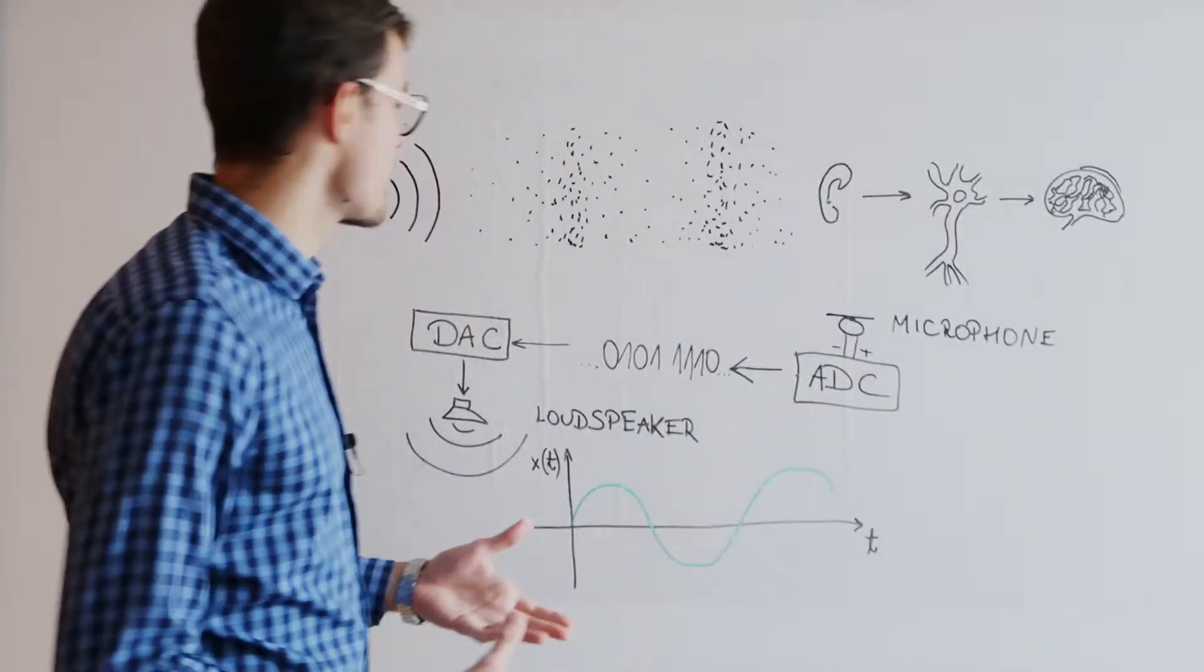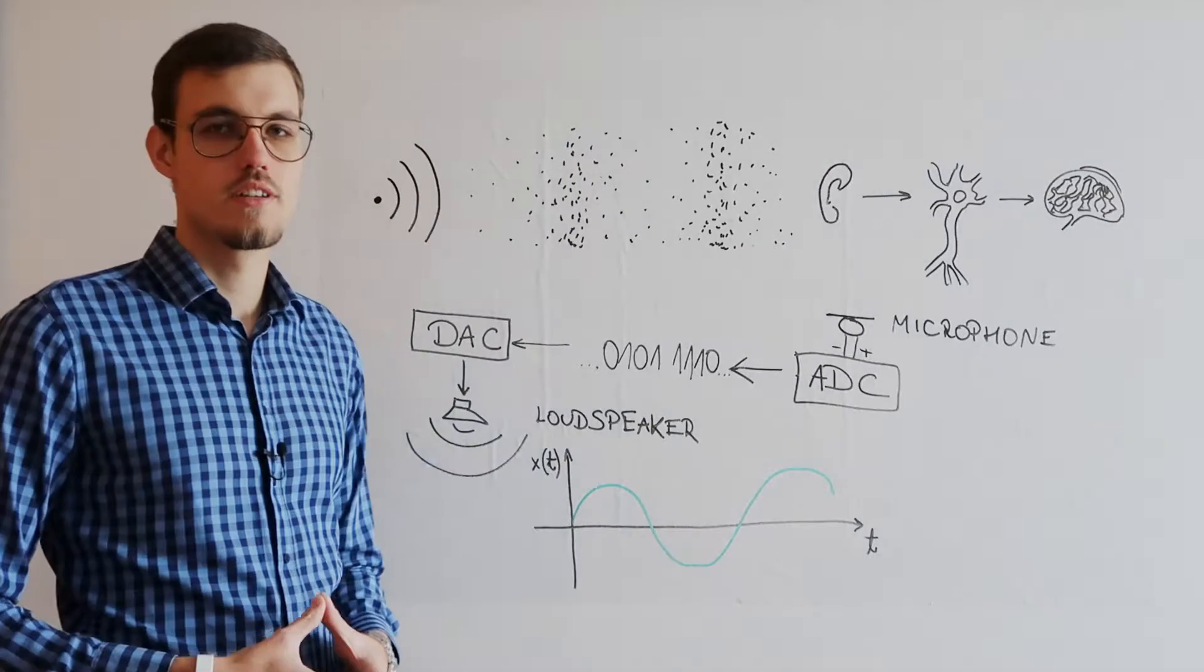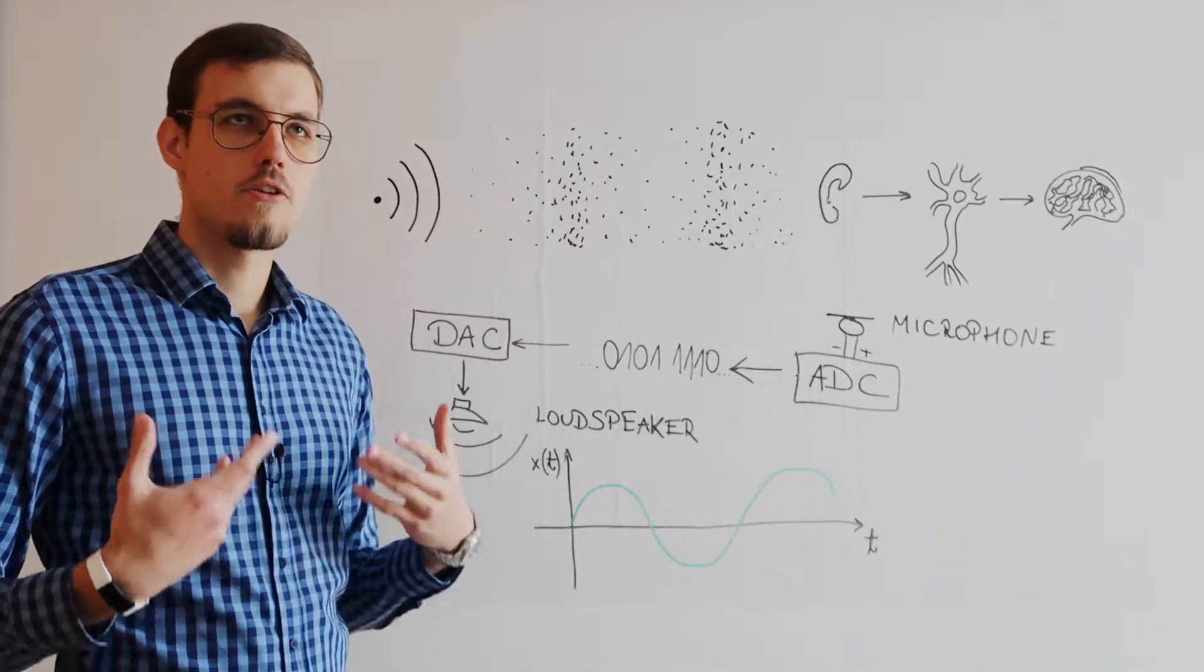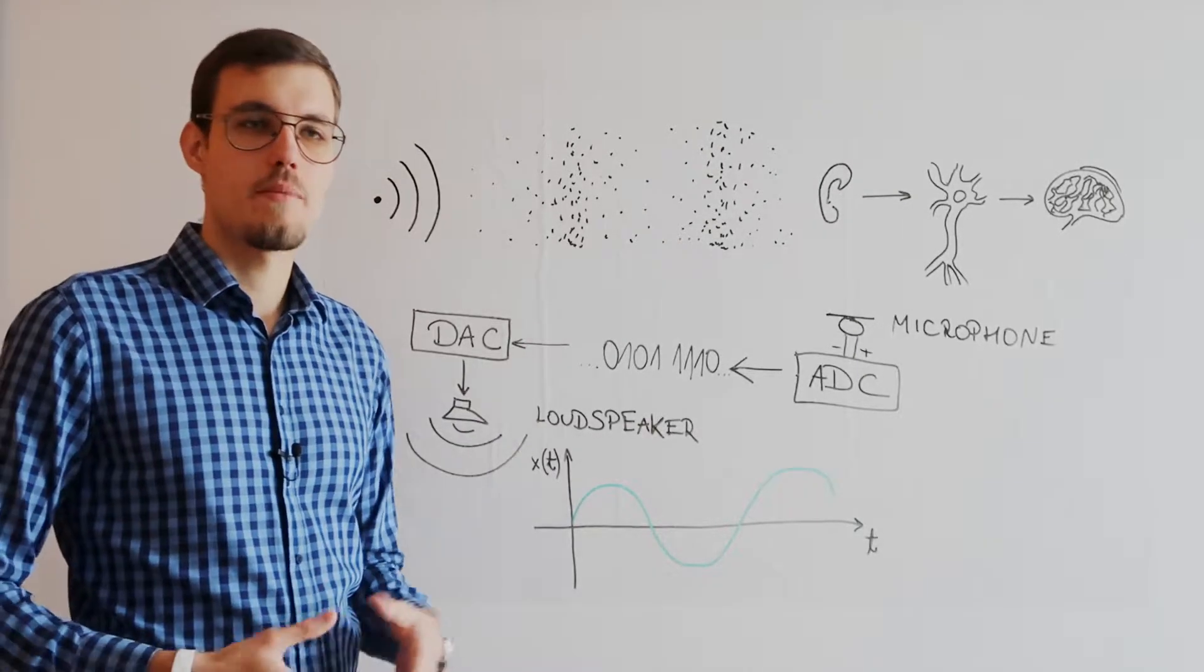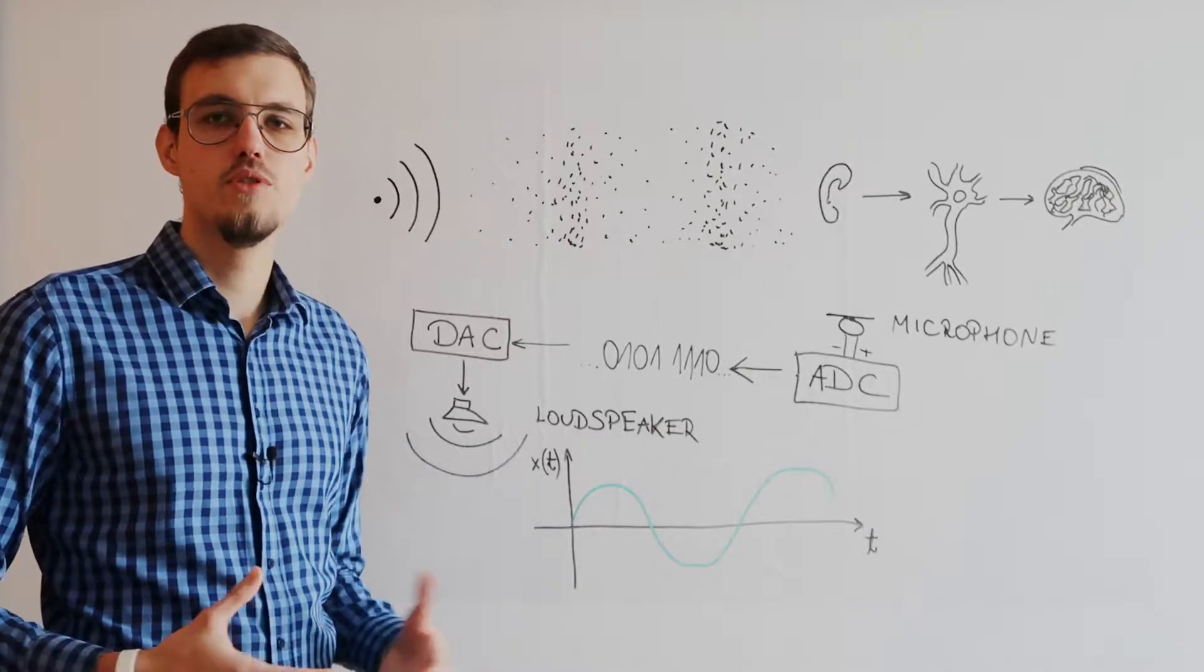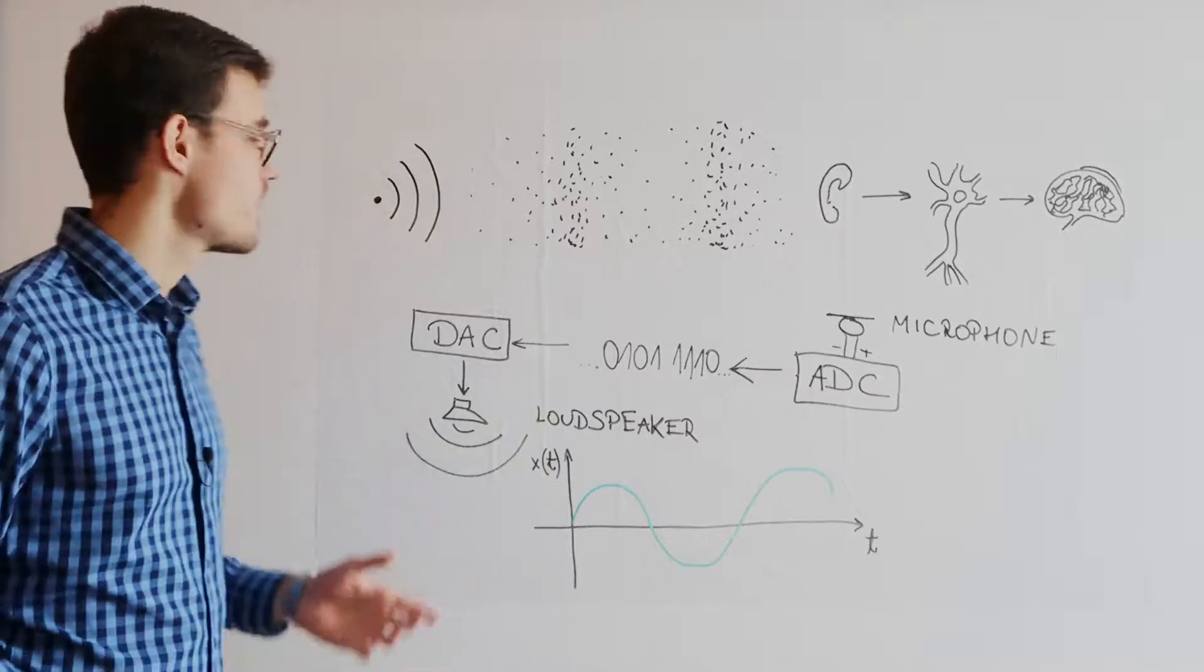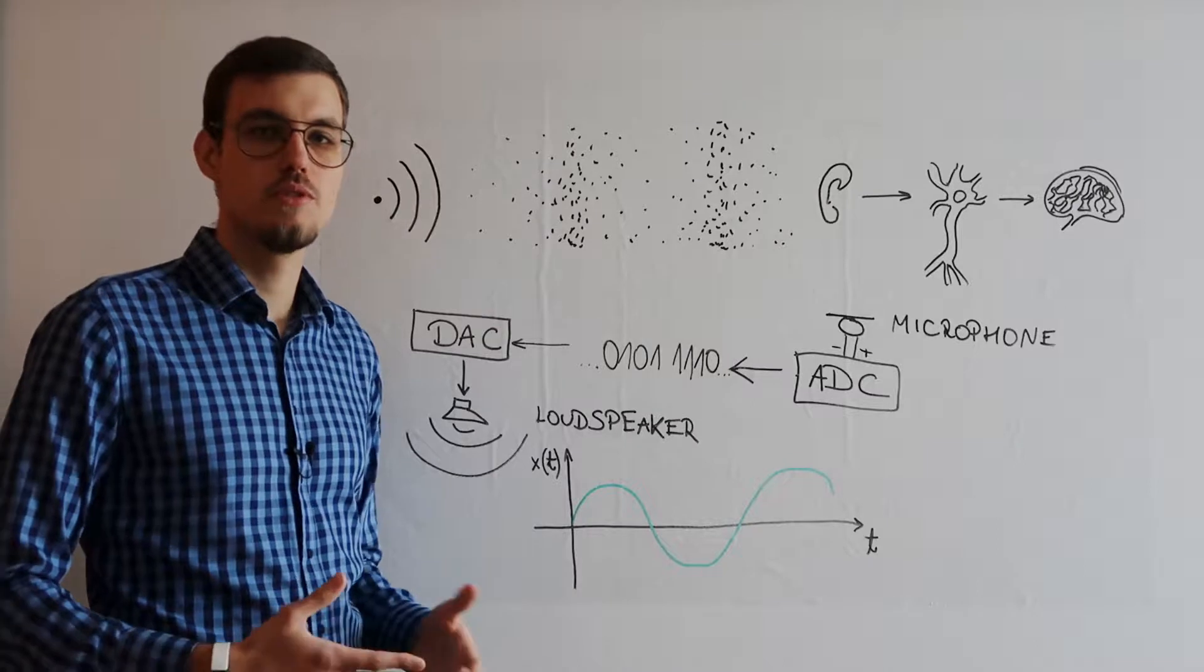Every sound begins with a vibrating object. The simplest one that we can imagine or the one that we know the best from reality are human vocal cords. Our speech results from applying tension to our vocal cords which are then moved by the air that flows through them.